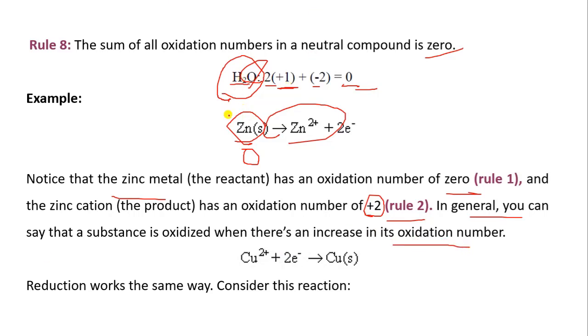So in general, you can say that a substance is oxidized when there is an increase in oxidation number. Here, there is oxidation of zinc. It loses the electron, so it is Zn2+. Obviously, when it loses the electron, it will increase the oxidation number, as we have seen in the first video. Now Cu2+ plus 2 electrons gives Cu.